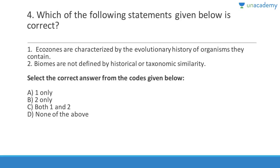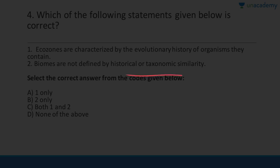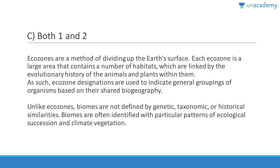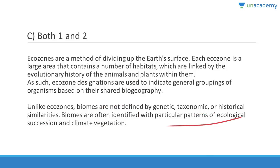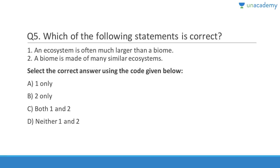Question 4: Ecozones are characterized by the evolutionary history of organisms they contain — that is correct. Biomes are not defined by historical or taxonomical similarity — that is also correct. Answer is C, both 1 and 2. Ecozones are a method of dividing up the earth's surface; each ecozone contains a number of habitats linked by the evolutionary history of the animals. Unlike ecozones, biomes are not defined by genetic, taxonomic, or historical similarities but are often identified with particular patterns of ecological succession and climate vegetation.